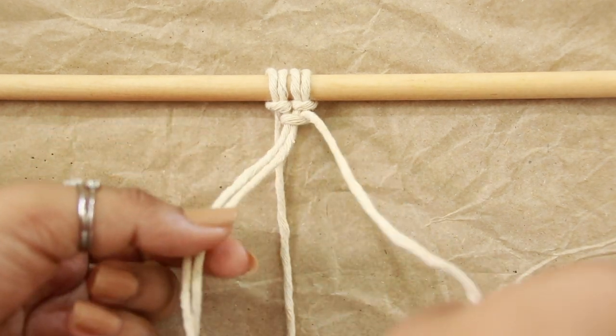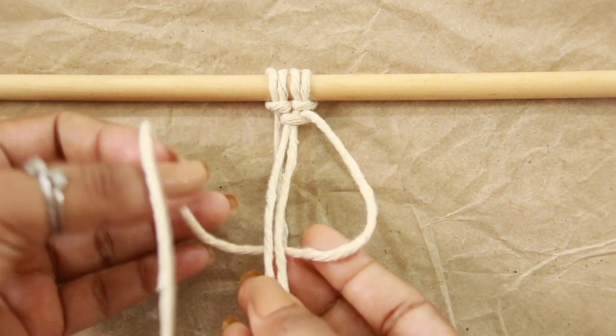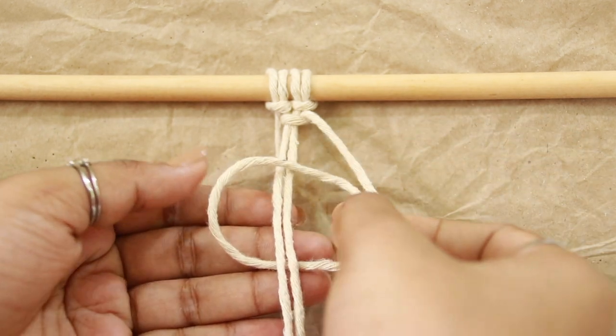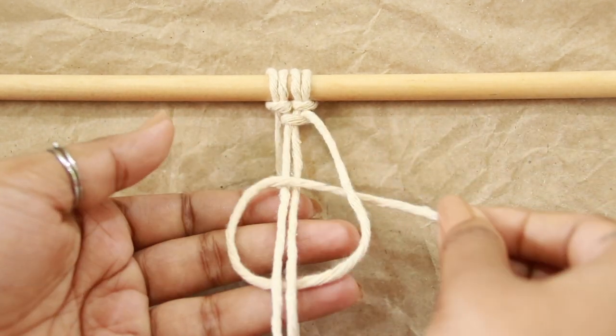This time, take the cord just the opposite way, under and over the filler cords, pass through the loop and secure the knot.